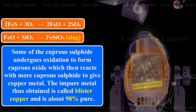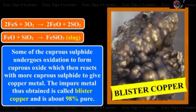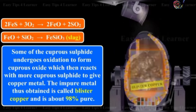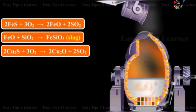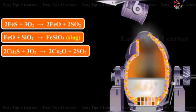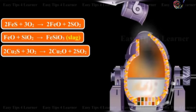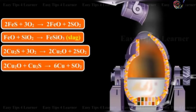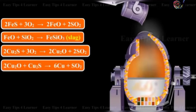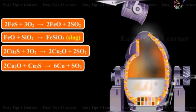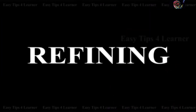The impure metal thus obtained is called blister copper and is about 98 percent pure. The reaction is: cuprous sulfide plus oxygen gives copper plus sulfur dioxide.